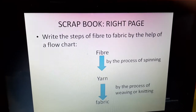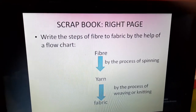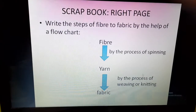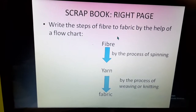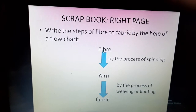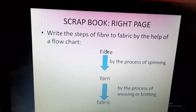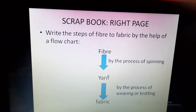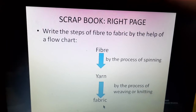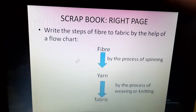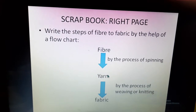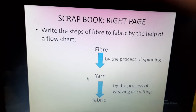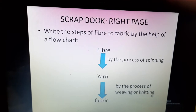Now, on the right hand side page, you will write the steps of fibre to fabric using a flow chart — that is, an arrow diagram. At first, the fibre is changed into yarn by the process of spinning. Then the yarn or thread is changed into fabric by the process of weaving or knitting. Only this much you will write on the right hand side page: fibre to yarn and yarn to fabric.